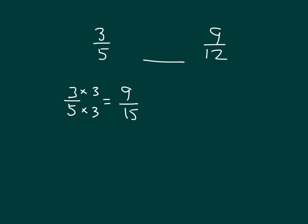Five times three is fifteen. So really, we're comparing nine-fifteenths with nine-twelfths. What's larger — fifteenths or twelfths? Right, twelfths are larger, so nine-fifteenths must be less than nine-twelfths. So our number sentence is: three-fifths is less than nine-twelfths.